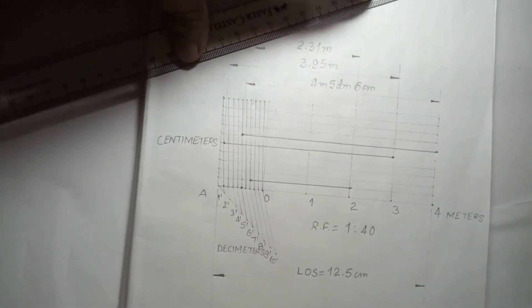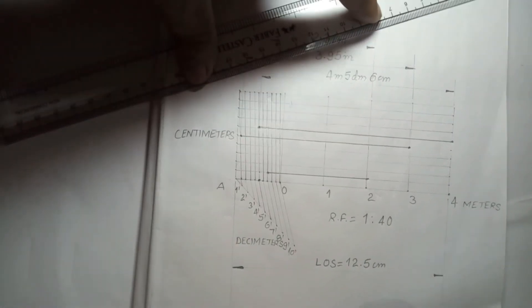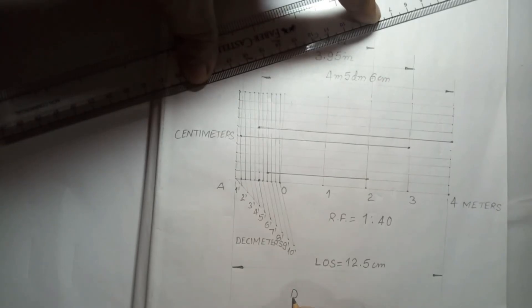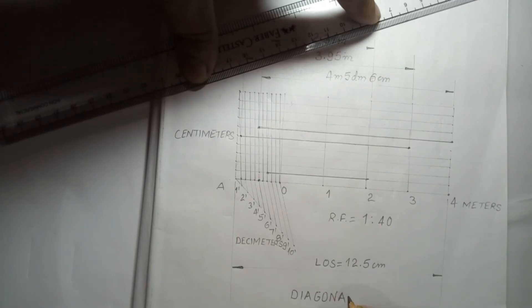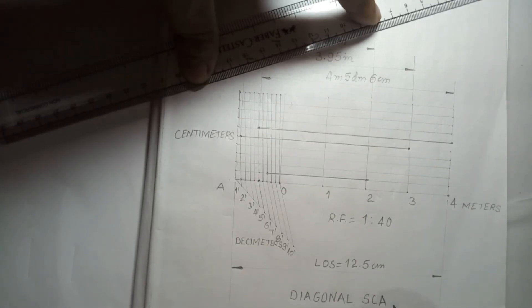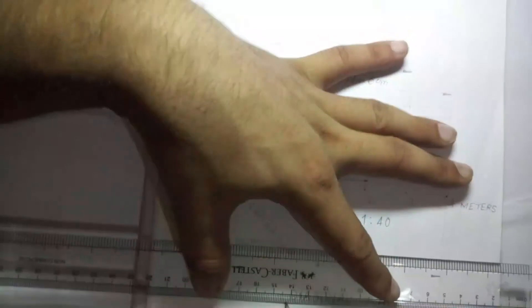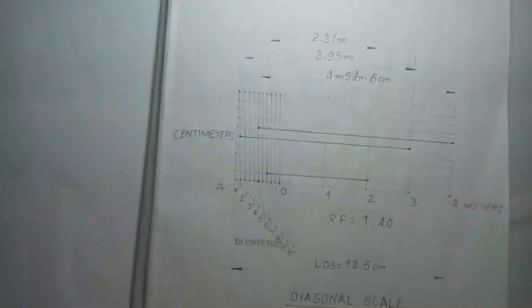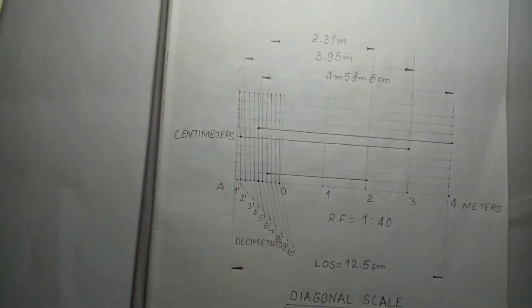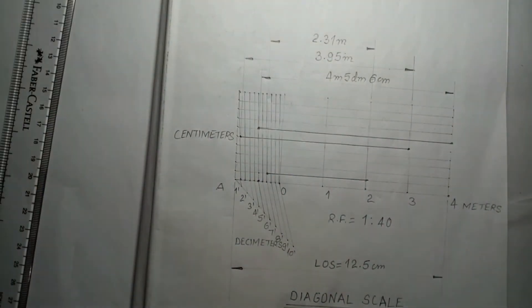Below the scale, write the type of scale: Diagonal Scale, using the same lettering format. In this way you can solve any question from diagonal scale.